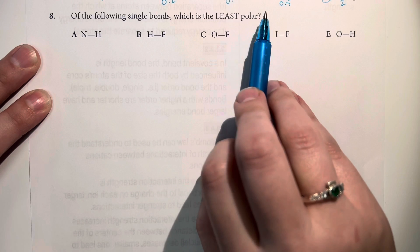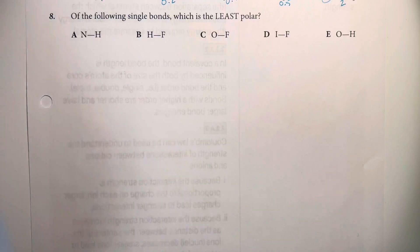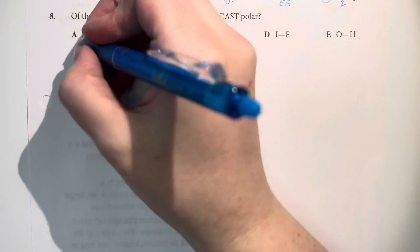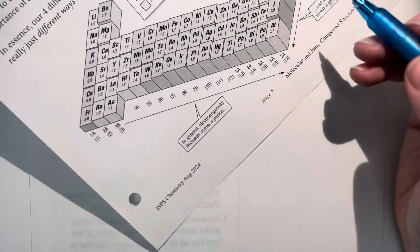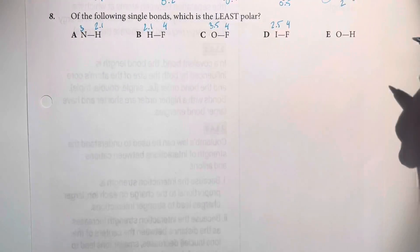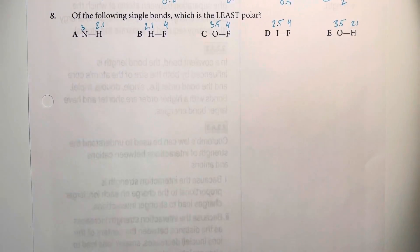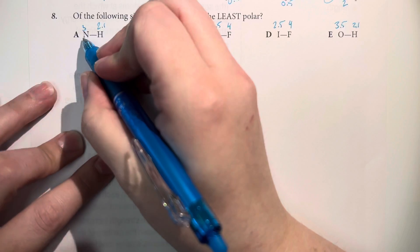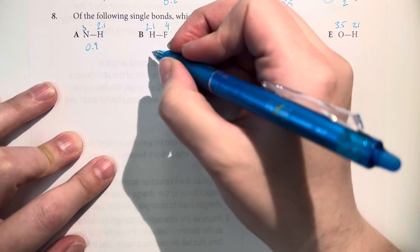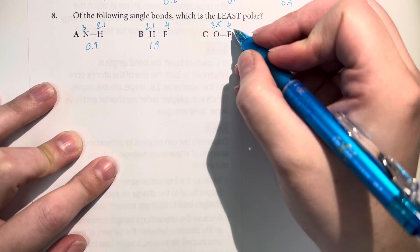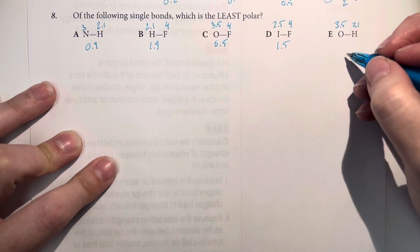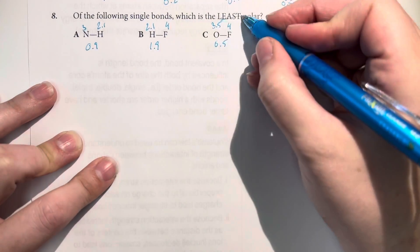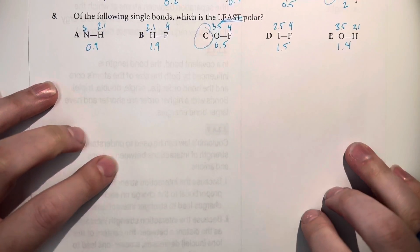Of the following single bonds, which is the least polar? We're looking for the smallest electronegativity difference. Nitrogen is 3, hydrogen is 2.1 — difference 0.9. Hydrogen is 2.1, fluorine is 4 — difference 1.9. Oxygen is 3.5, fluorine is 4 — difference 0.5. Iodine is 2.5, fluorine is 4 — difference 1.5. Oxygen is 3.5, hydrogen is 2.1 — difference 1.4. We're looking for the least polar, so the smallest electronegativity difference. That gives me option C. See you next time.